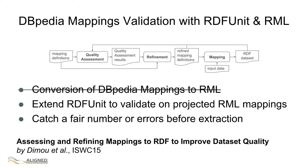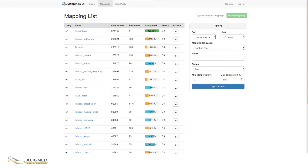Until the last DBpedia release, mappings between Wikipedia infoboxes and the DBpedia ontology were created and curated by the DBpedia community using a simple wiki. An additional conversion to RML, an RDF-based mapping language, was needed to validate these mappings with RDFUnit. Currently, DBpedia is changing this approach by introducing a new Git-based mappings UI where mappings are created directly in RML.